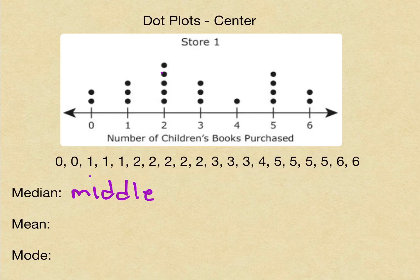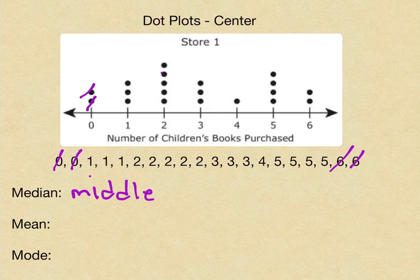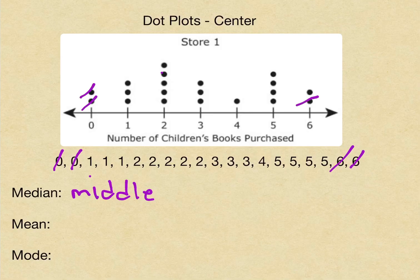But also when they're in a dot plot, they're automatically in order from least to greatest because it's on a number line. So you have two options here. Since they're written out, you can go ahead and mark out until you get to the center. Also, an option is to mark out the points, the dots on the dot plot. We can also do that. So if you mark out one here and one here, you can also make your way towards the middle.